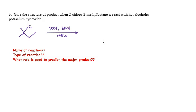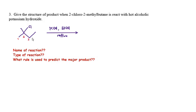For question number three, give the structure of the product when 2-chloro-2-methylbutane is reacted with hot alcoholic potassium hydroxide. The structure of 2-chloro-2-methylbutane has four carbons; at carbon two there is one chloro group and one methyl group. Hot alcoholic potassium hydroxide is the reagent and conditions for this reaction.